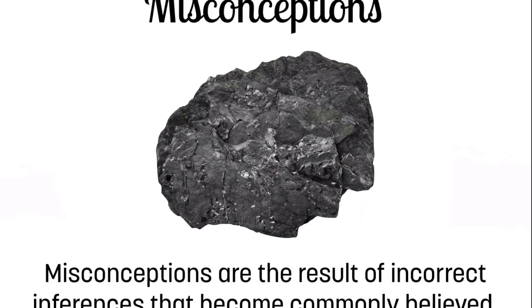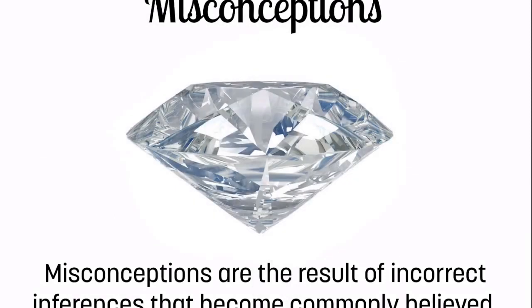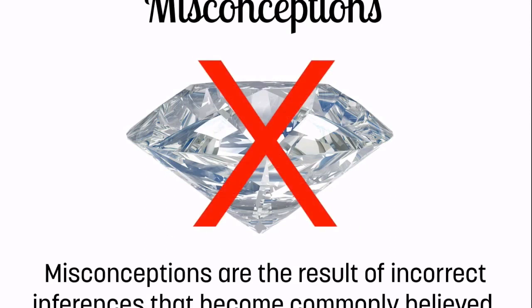When those inferences are believed by large groups of people, they result in misconceptions. Here's a misconception: that coal forms diamonds. You may have heard of that, it's totally wrong. Coal does not form diamonds. Diamonds actually form from another carbon source called graphite. Somewhere along the way that information was passed out and people believed it, and to this day people believe that.